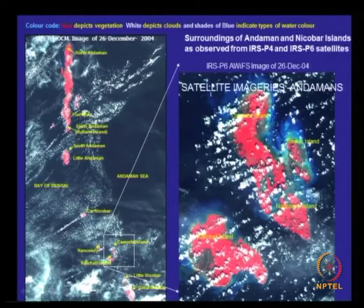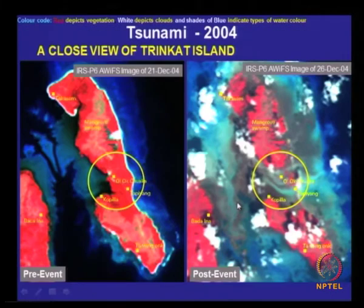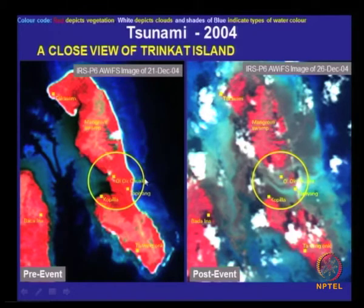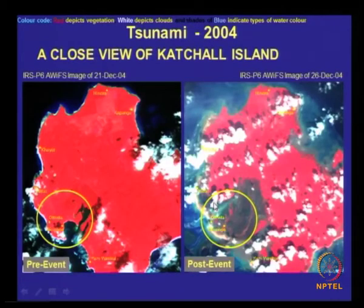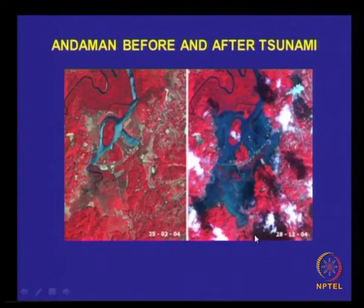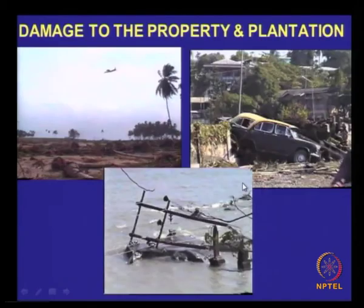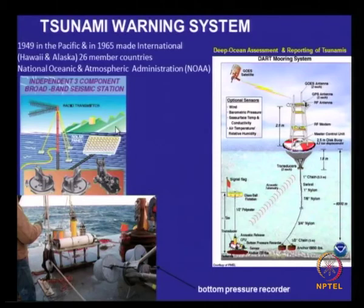Some of the cloud imagery is not clear, but here you can see — this is the island in the ocean that was completely cut. One piece of island is almost devastated. Such information can be obtained from satellite imageries, and this shows damage to properties.